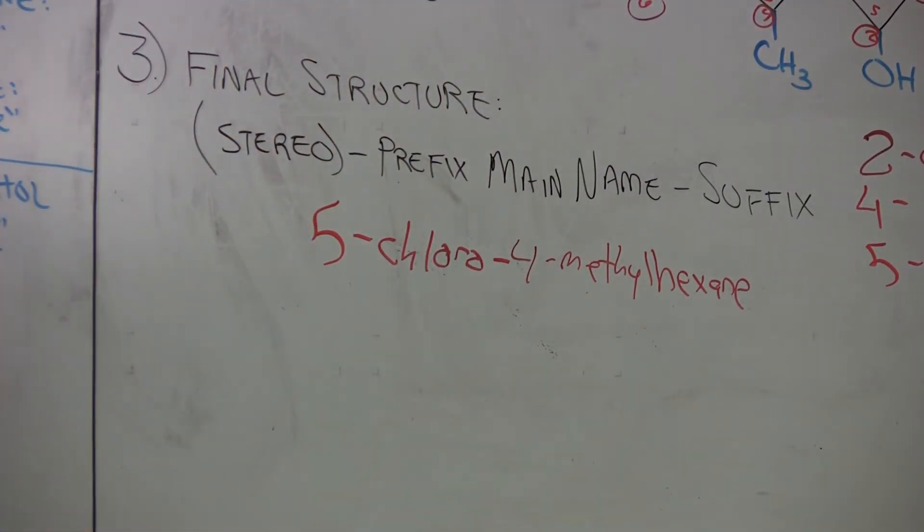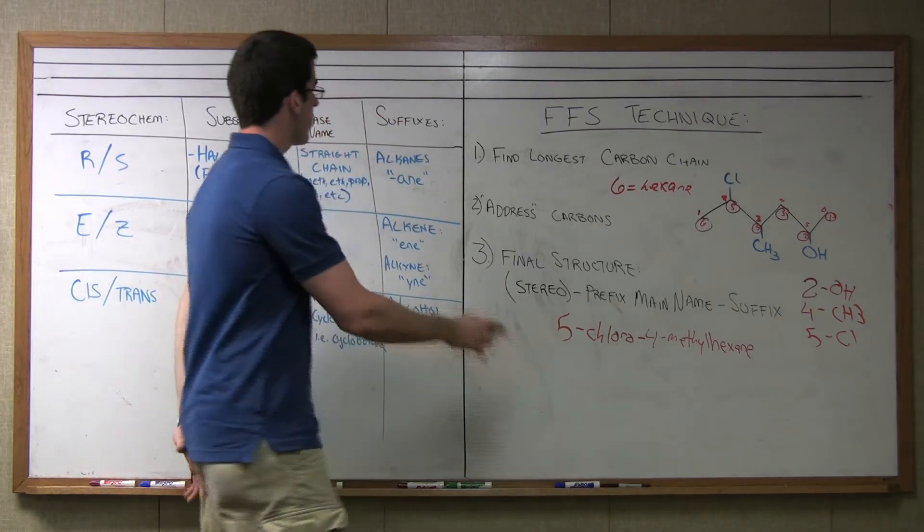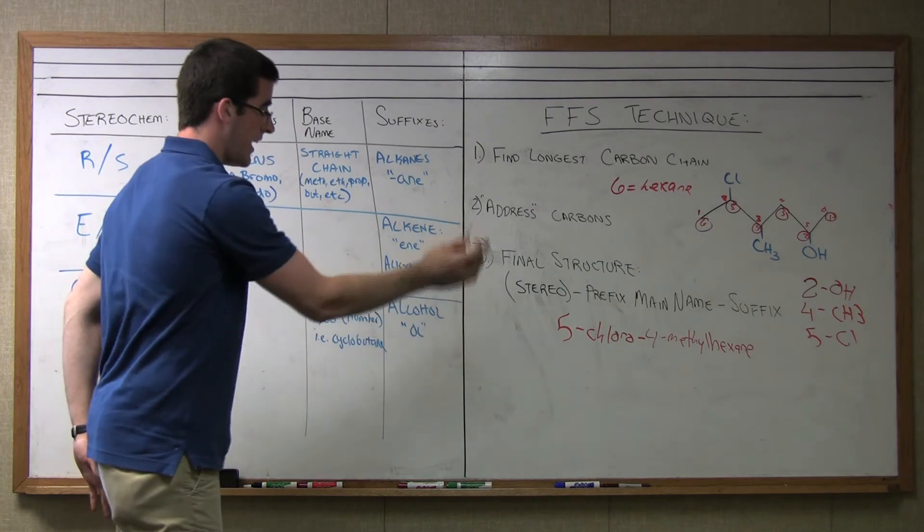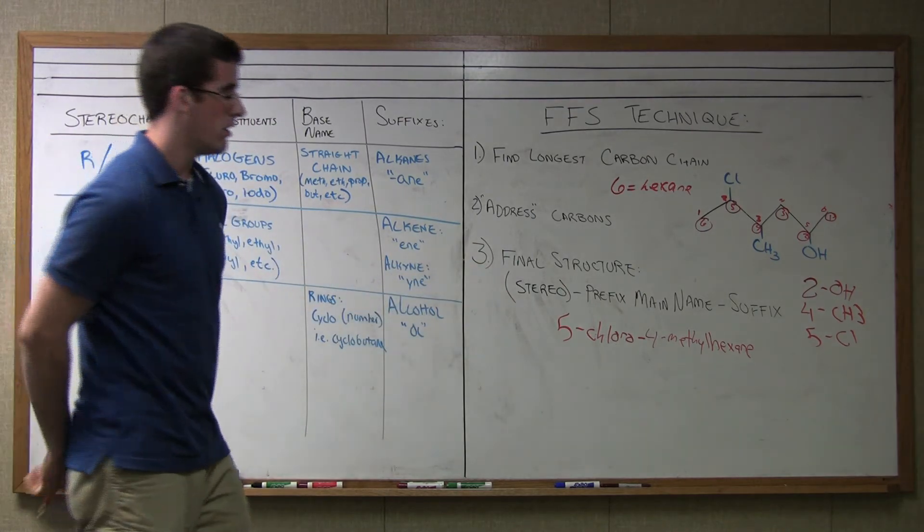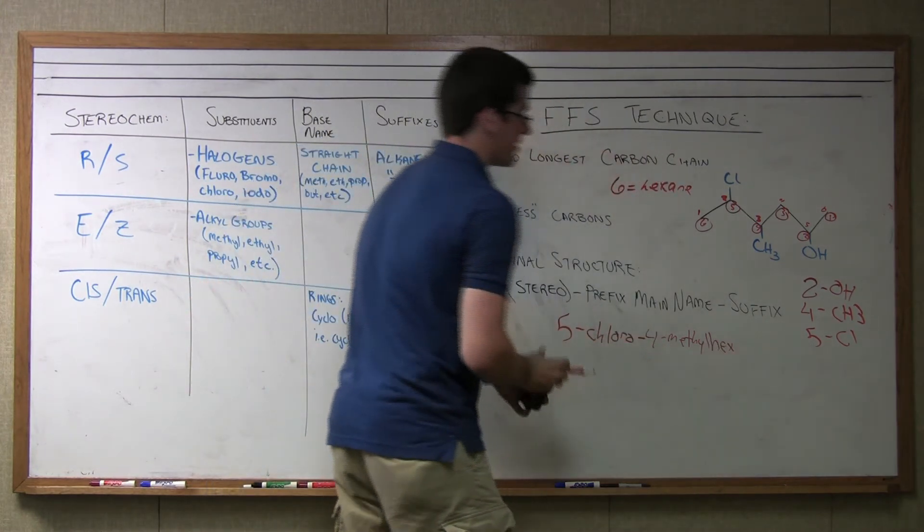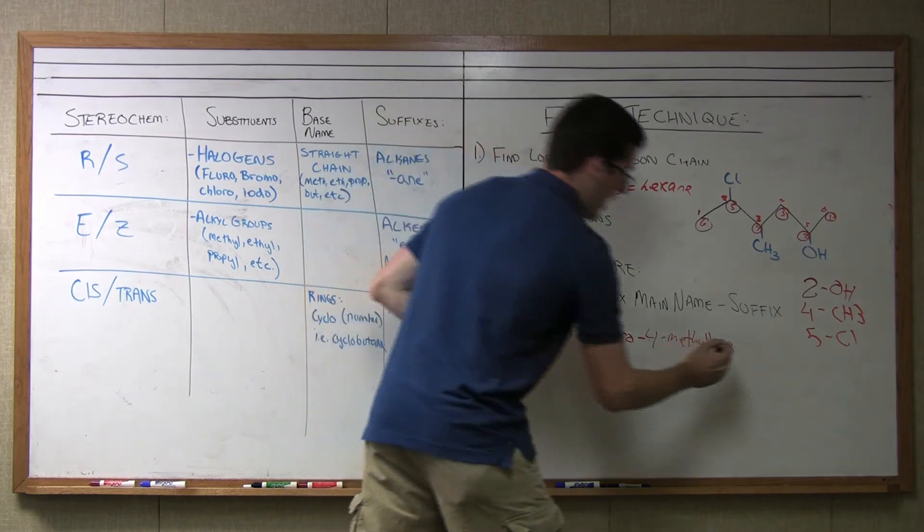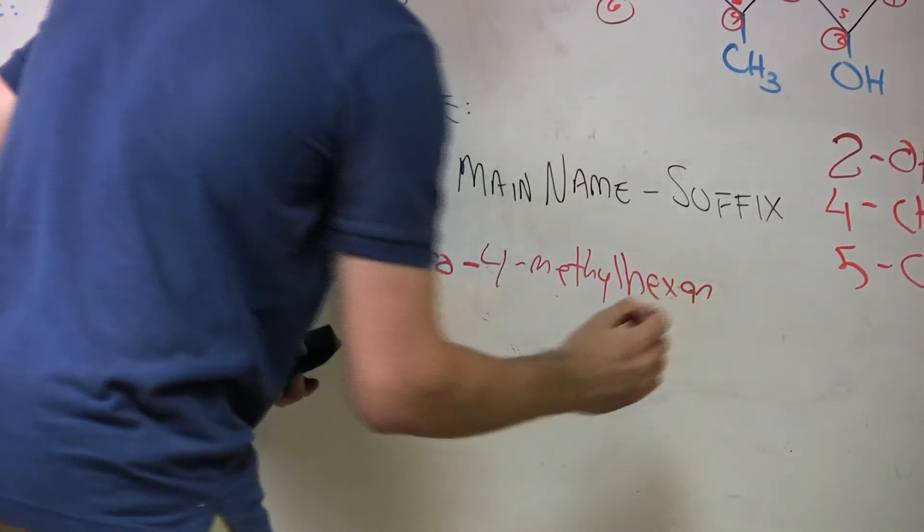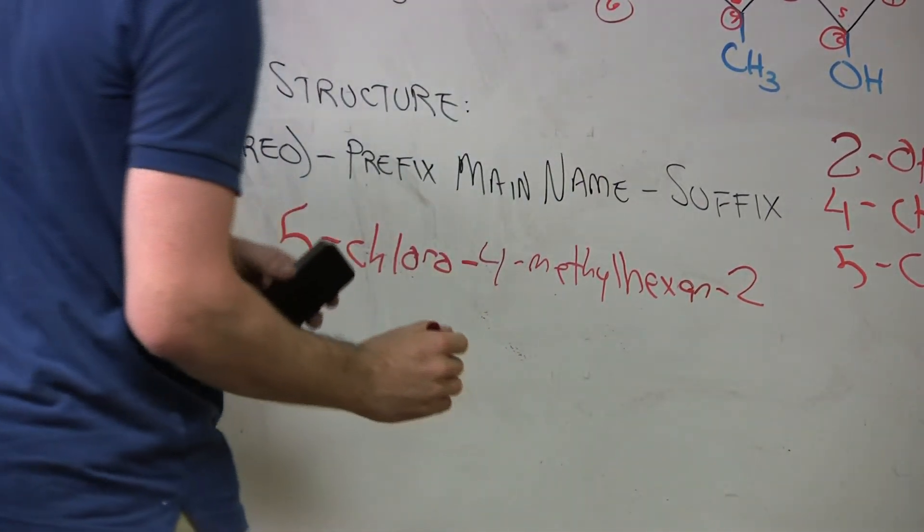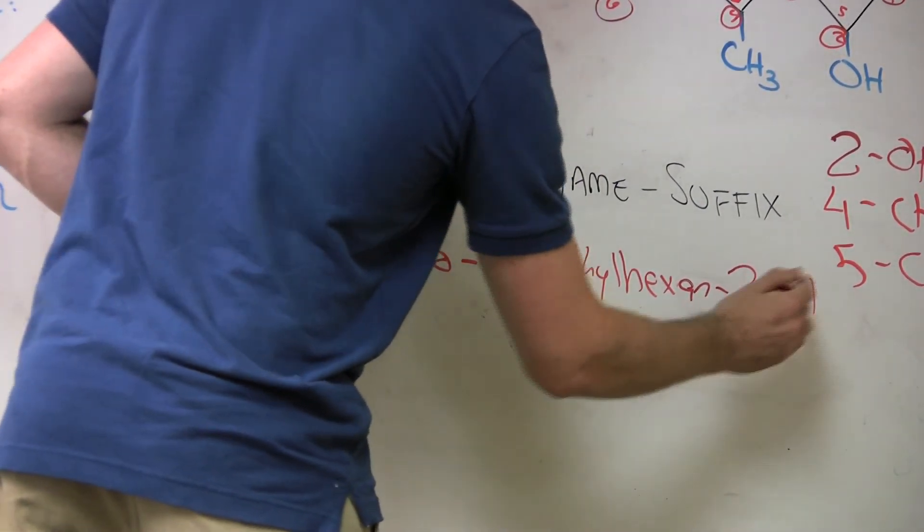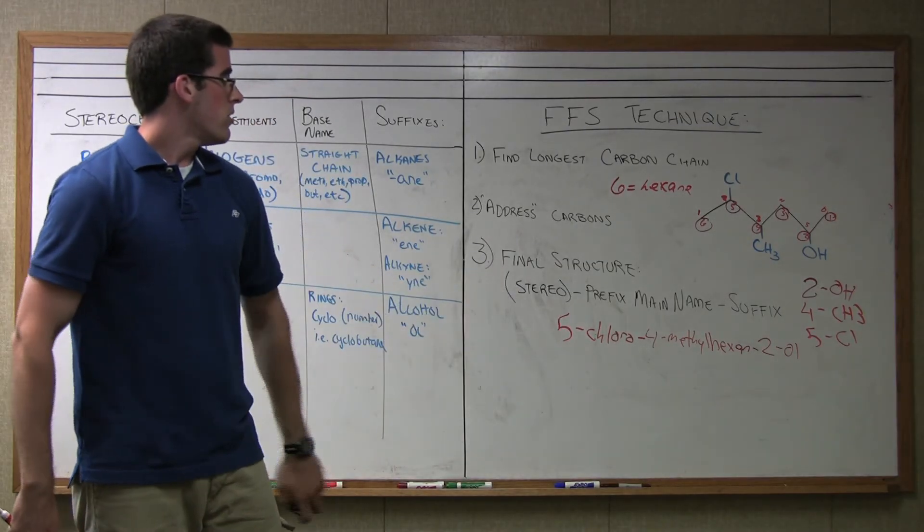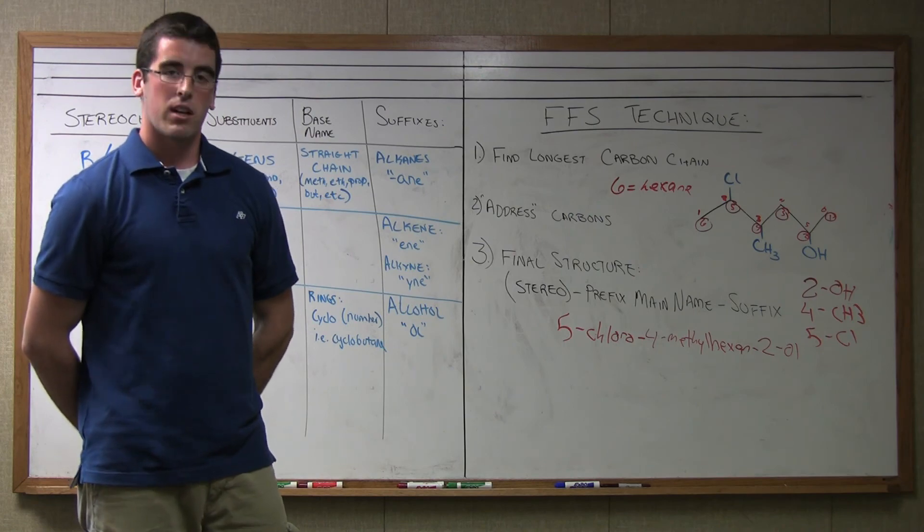So now that I have my main name here, I'm going to finish it off with my one suffix, which is my alcohol. And now the suffix, according to this table, is the alcohol, and it changes the ending, the ane, into an an and ol to indicate that it's an alcohol. So what I'm actually going to do is alter this to incorporate the alcohol's position. I'm going to put in an an, and I'm going to indicate where this is, and it's at the second position. I'm going to put a two, and I'm finally going to cap it off with putting the ol back to indicate the alcohol. And so, our final name, 5-chloro-4-methylhexan-2-ol, and that is how you name organic compounds.